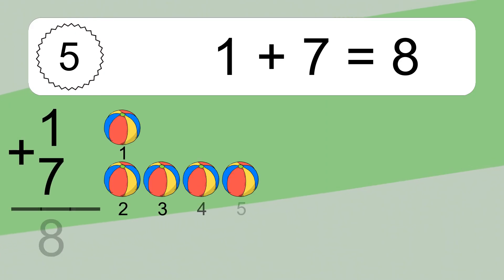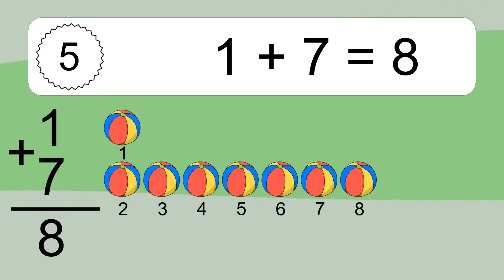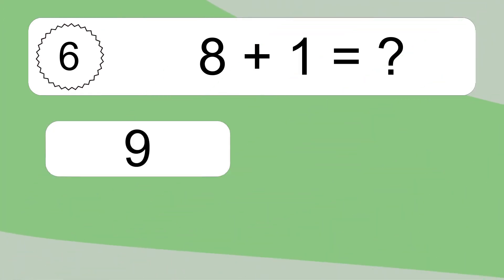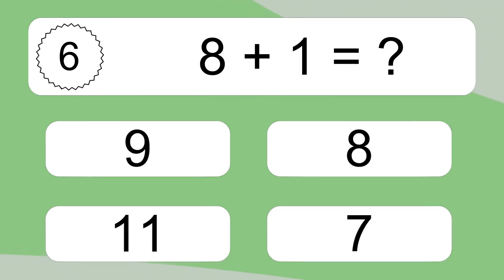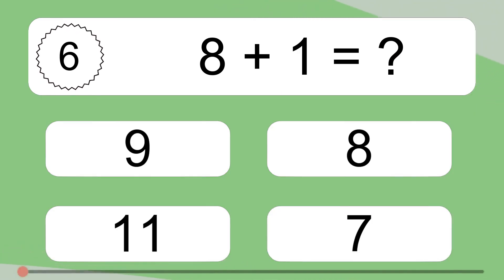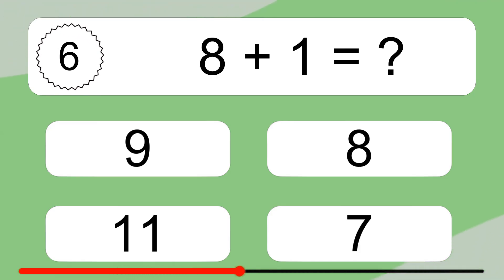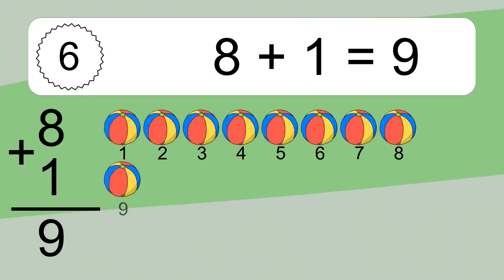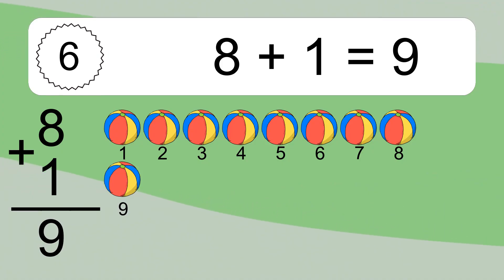1, 2, 3, 4, 5, 6, 7, 8. 8 plus 1 equals 9. Let's count it: 1, 2, 3, 4, 5, 6, 7, 8, 9.